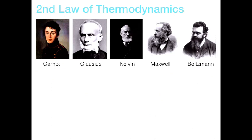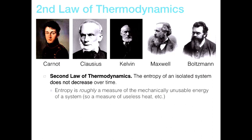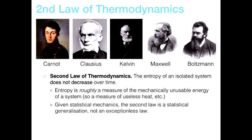Here's a traditional picture of some key figures who played a very important role in the development of the second law of thermodynamics. In very simple terms, the law holds that the entropy of isolated systems does not decrease over time. We can think of entropy as roughly a measure of the mechanically unusable energy of a system — a measure of useless heat. And given a contemporary understanding of Boltzmannian statistical mechanics, we can think of the second law as something like a statistical generalisation, not an exceptional and fundamental law, but still a very empirically accurate one.